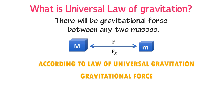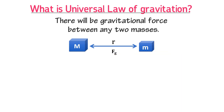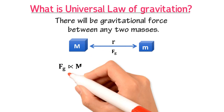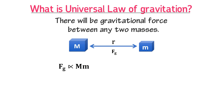Let us call this gravitational force FG. Newton stated that FG depends on the magnitude of the two masses. First, FG is directly proportional to the product of the magnitudes of mass M and mass m. Second, Newton states that gravitational force FG is inversely proportional to the square of the distance between the two masses.